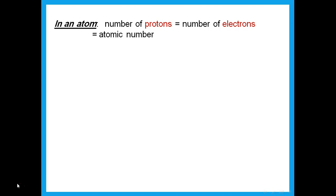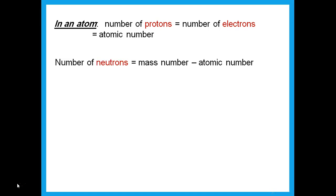The number of protons equals the number of electrons equals the atomic number, if the atom has not lost or gained any electrons. The atomic number is the smaller number. To find the number of neutrons, subtract the atomic number from the mass number — it's the big number minus the small number.